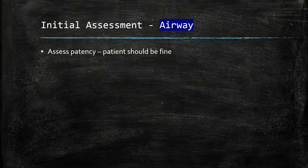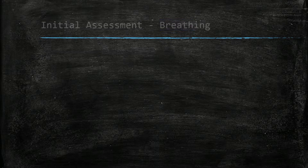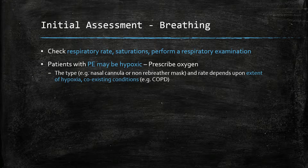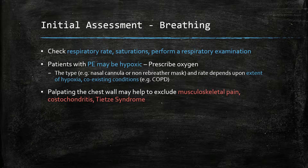This is usually not an issue in a patient with a PE. Moving on to breathing, we check the respiratory rate, saturations, and perform a full respiratory examination. Patients suffering from a PE may be hypoxic — therefore prescribe oxygen if required. The type and rate of oxygen prescribed will depend on the extent of the hypoxia and coexisting conditions such as COPD. Palpating the chest wall will help in ruling out musculoskeletal pain, costochondritis, and Tietze syndrome.